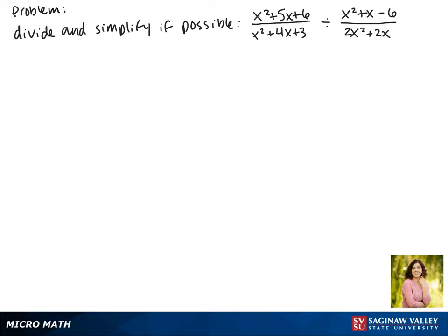Today we'll be dividing and simplifying, if possible, the expression x squared plus 5x plus 6 over x squared plus 4x plus 3 divided by x squared plus x minus 6 over 2x squared plus 2x.